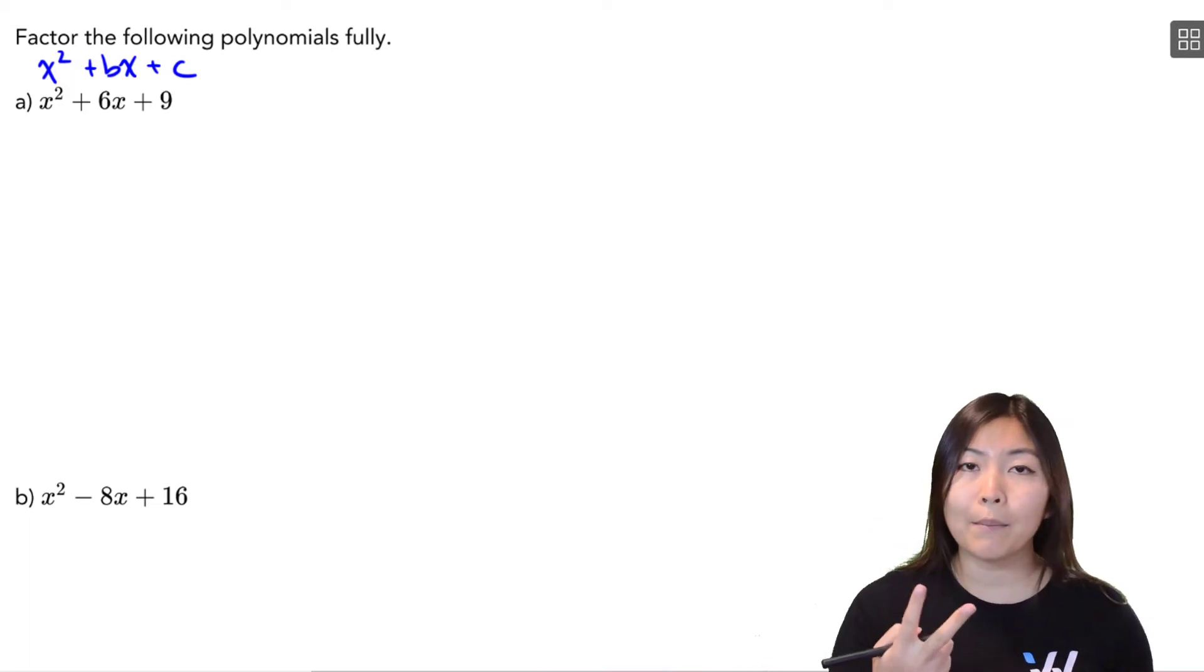Find two numbers, m and n, that multiply to c, so multiply to 9, and add to b, so they have to add to 6, and then you can factor it that way.